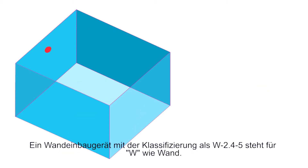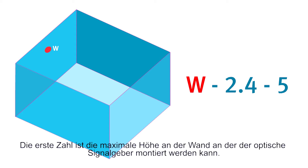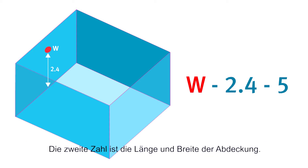A wall mounted VAD might be rated W2.4.5, where W stands for wall. The numbers again represent the coverage volume, this time in the shape of a cube, where the first number is the maximum height on the wall that the VAD can be mounted and the second number is the length and width of the coverage.